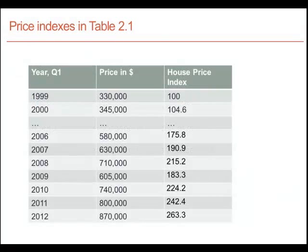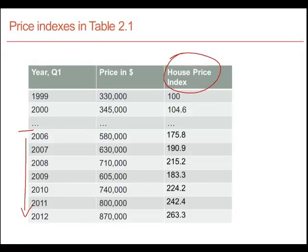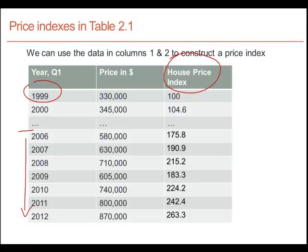Here is an expanded form of the same data. These are the prices of houses in Vancouver in particular time periods. You will recognize the data from 2006 onwards from the earlier table; we have added values for 1999 and 2000. We are going to construct a house price index in the final column, and we will choose 1999 as the base year.